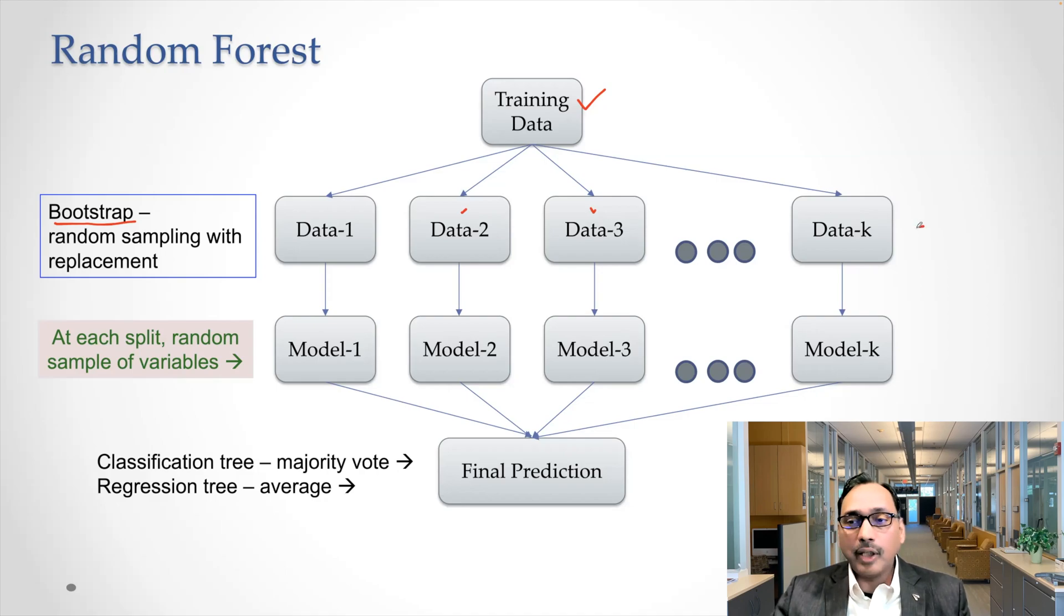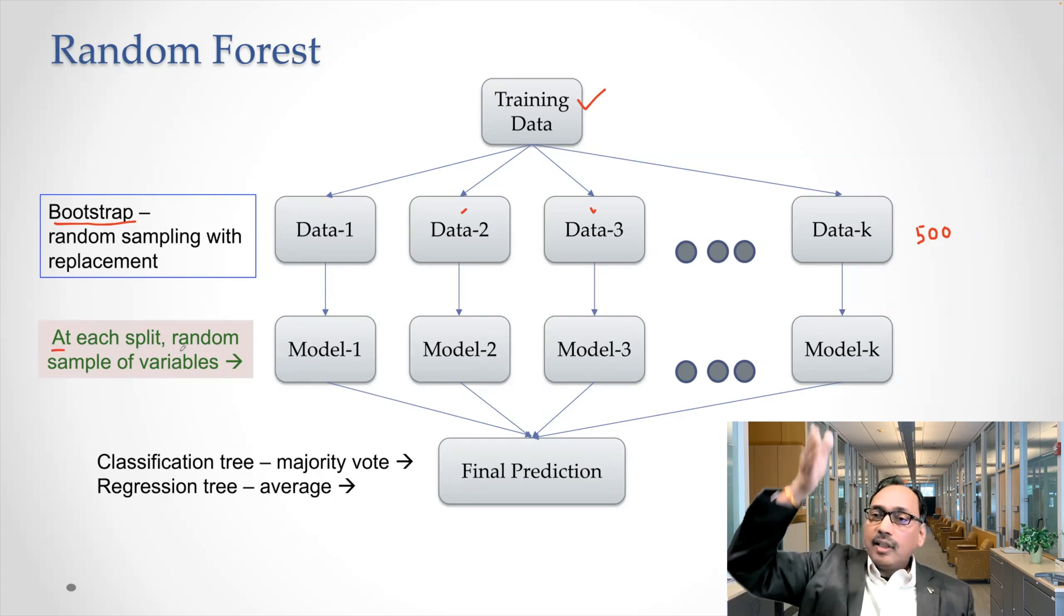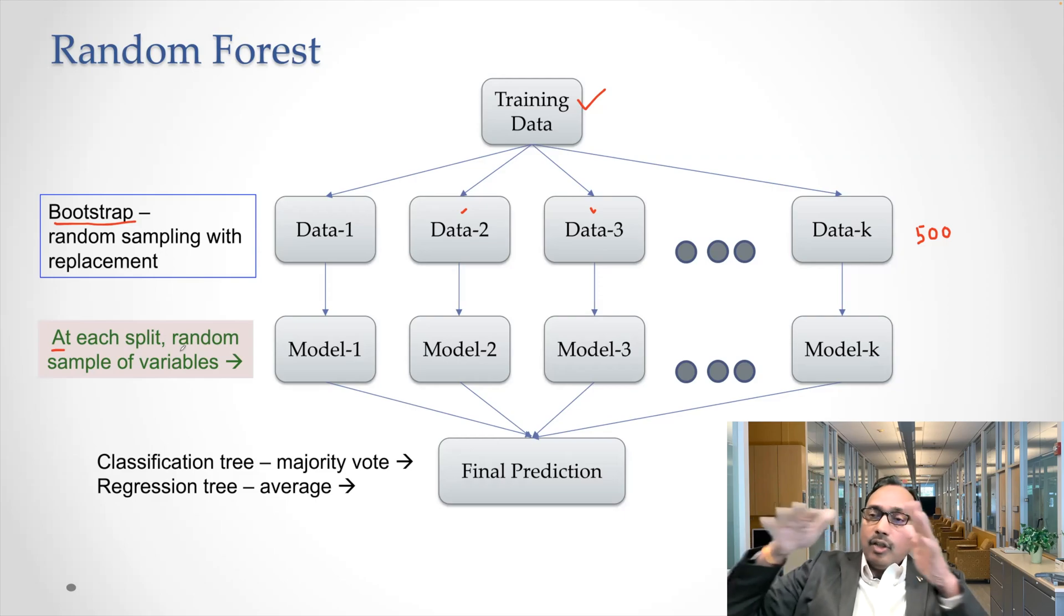So again, it could be like any number of trees. I'm just putting a number like 500 here. Now, what is different compared to bagging is the way the models are created. You can see at each split, so when you are creating a tree and you are splitting the tree, at each split, random sample of variables are taken.